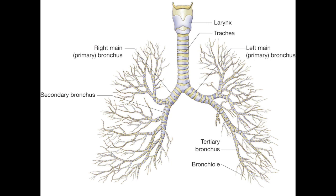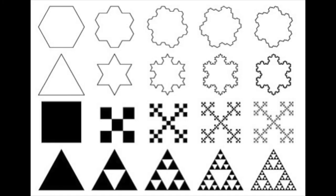Just like tree branches, we have a similar structure inside our bodies. Here's an example: this is an image of lungs. You see these branch-like formations — branches that repeat over and over again in similar ways to tree branches. They start larger and as you move out toward the edges they get smaller and smaller, but you see the same kind of branch formation repeated over and over again.